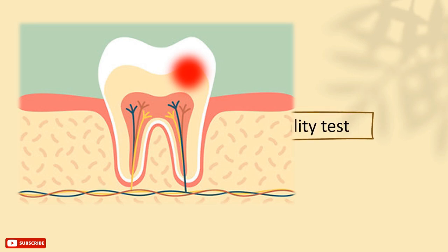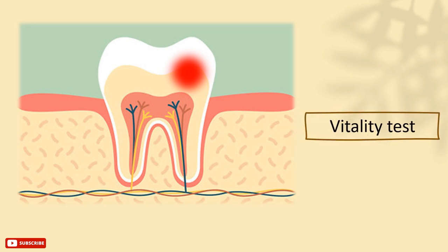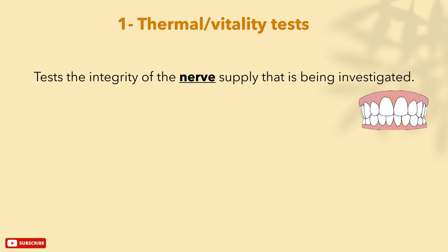Starting with vitality tests — the first is the thermal vitality test. Keep in mind that these tests only test the integrity of the nerve supply of the tooth being investigated, not the blood supply. The laser Doppler flowmetry is the method used to evaluate blood flow status in teeth, and it can also be used to assess pulpal vitality.